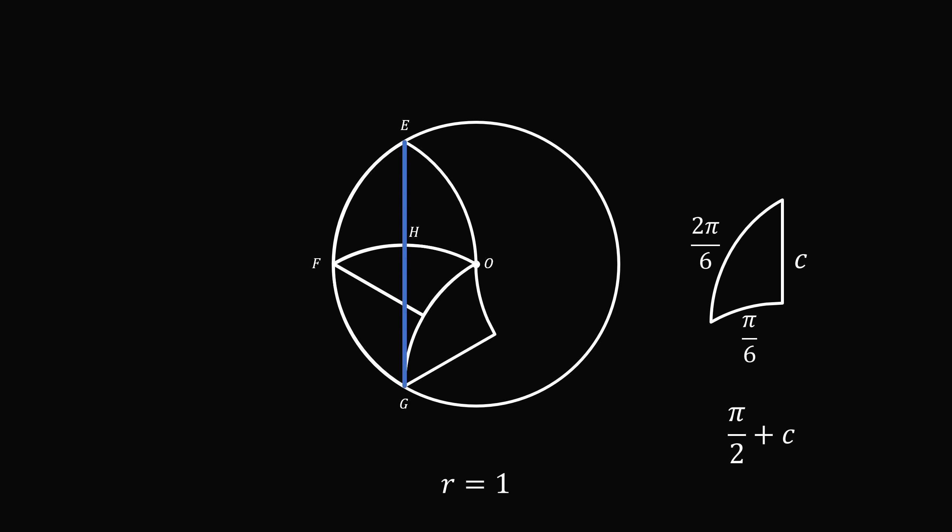Construct the chord e, h, g. Now, e, h is equal to e, g minus g, h.